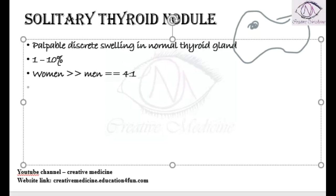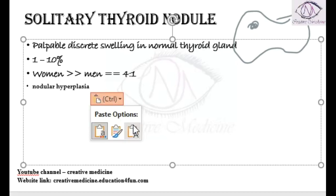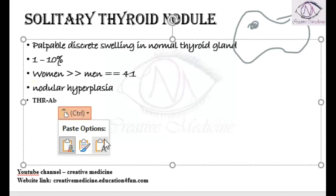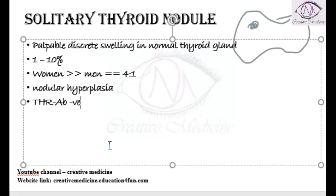In solitary thyroid nodule, nodular hyperplasia is common — the nodule undergoes hyperplasia in these patients. The thyroid receptor antibody is negative in solitary thyroid nodule.